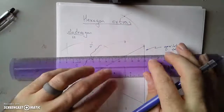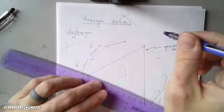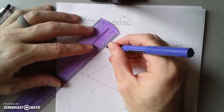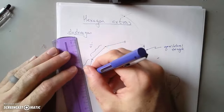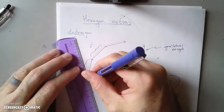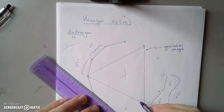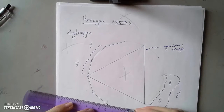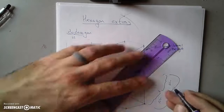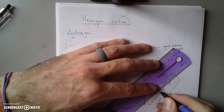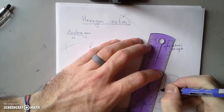Now I have all my parts so I can connect all of these and make a dodecagon. One of the ways we can make more complicated polygons is by starting with something simple and then using some method of subdivision to turn that simpler polygon with fewer sides into something with a whole lot more sides.